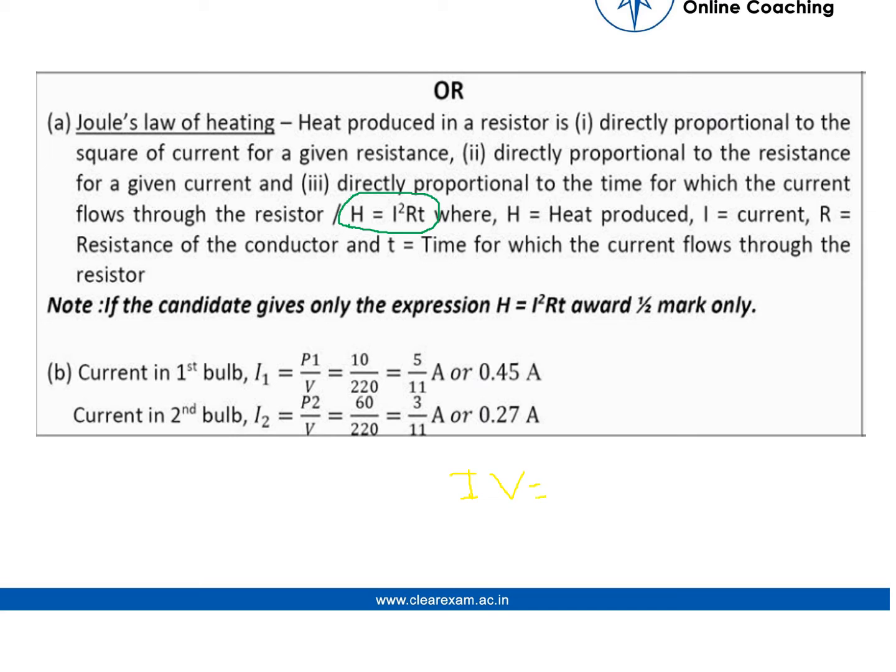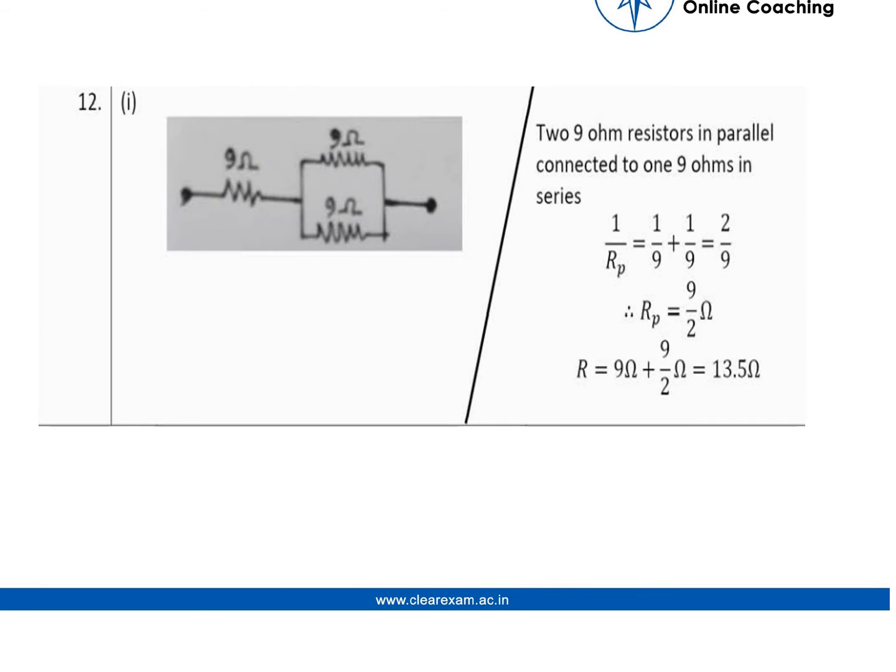Putting both the values in respective bulbs we get 5 upon 11 ampere and 3 upon 11 ampere which gives 0.45 ampere and 0.27 ampere. Now let us move to the first part which said that we have to connect three resistors.